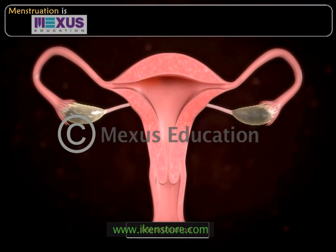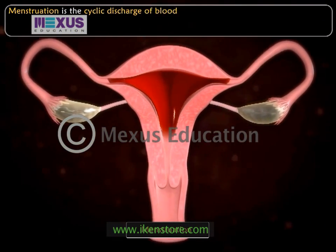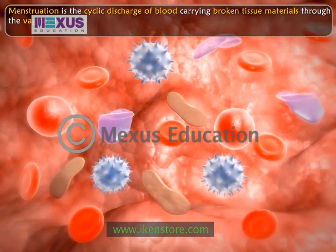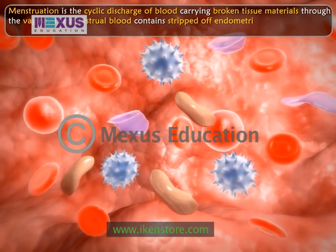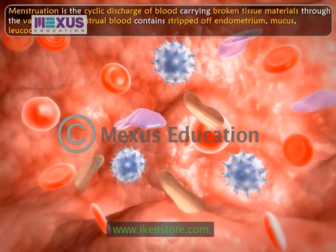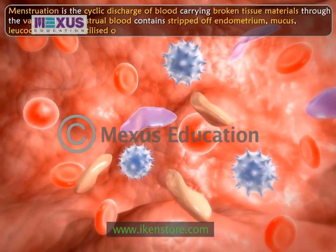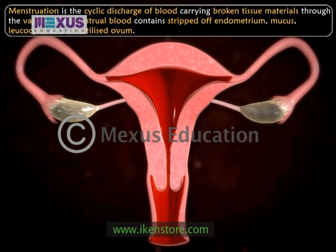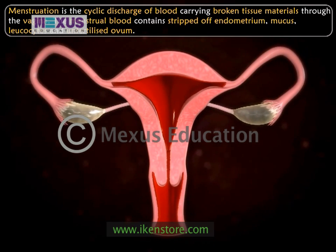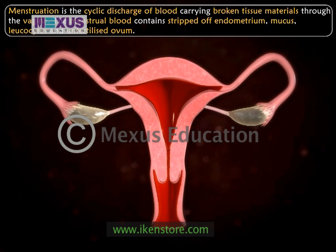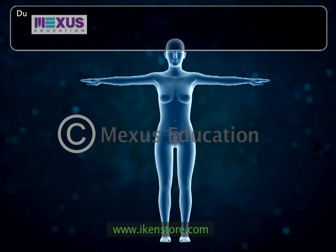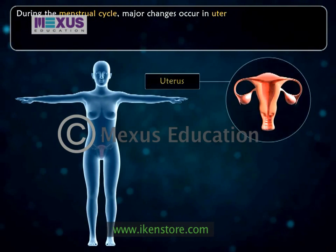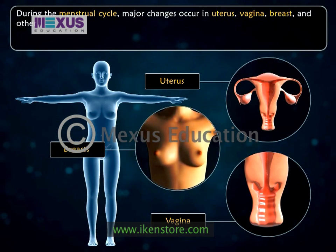Menstruation is the cyclic discharge of blood carrying broken tissue materials through the vagina. The menstrual blood contains stripped endometrium, mucous, leukocytes, and unfertilized ovum. A menstrual cycle is taken to begin with the onset of menstrual bleeding and ends just before the next menstruation. During the menstrual cycle, major changes occur in the uterus, vagina, breast, and other organs.